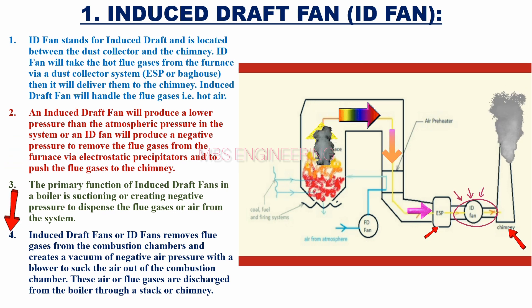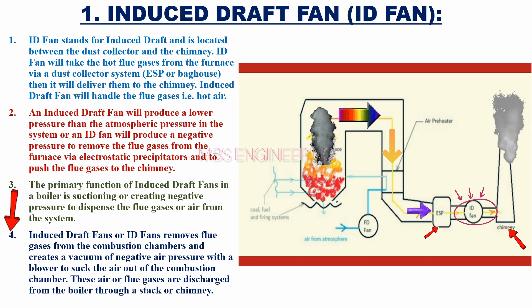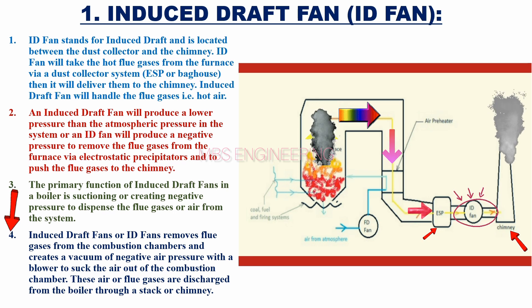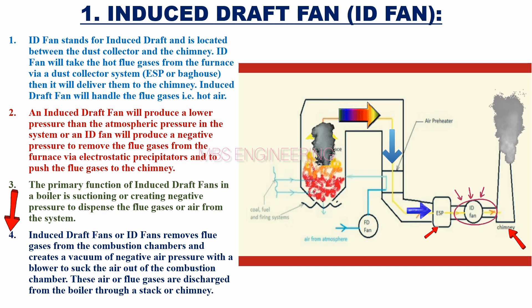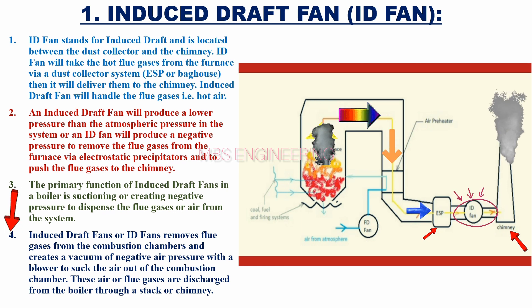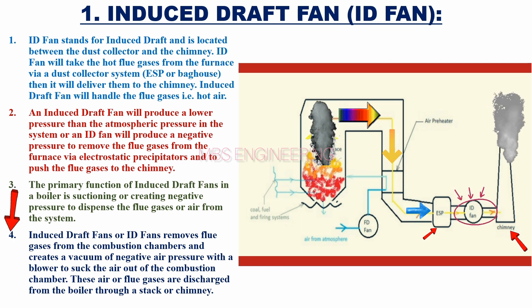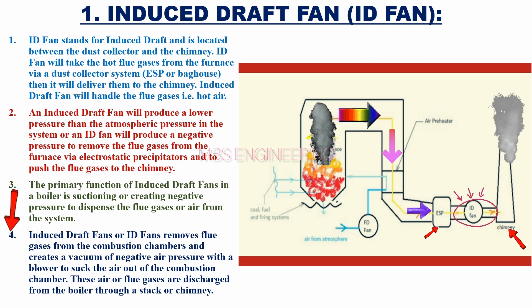Induced Draft Fans or ID Fans remove flue gases from the combustion chambers and create a vacuum of negative air pressure with a blower to suck the air out of the combustion chamber. These air or flue gases are discharged from the boiler through a stack or chimney. Please refer to the schematic layout — these flue gases are discharged from the boiler through a stack or chimney via air pollution control equipment.